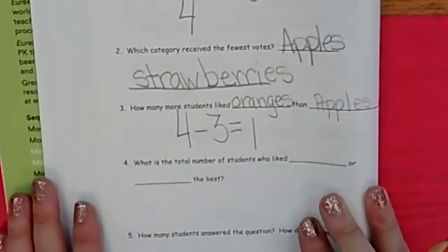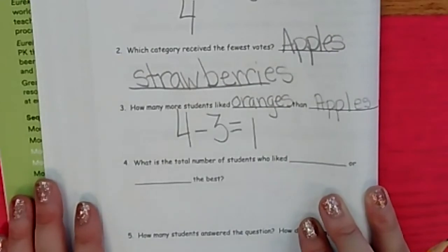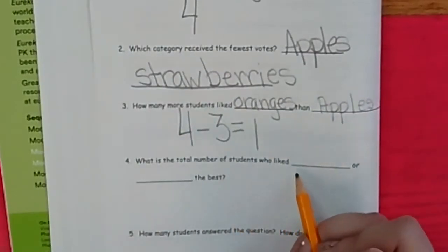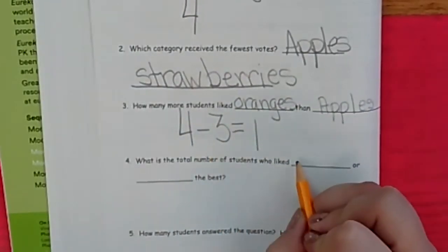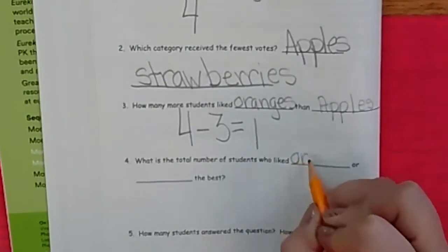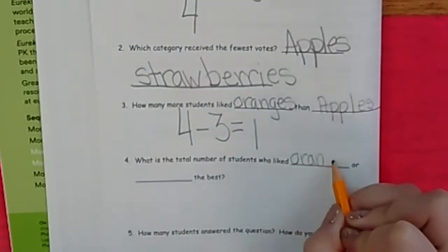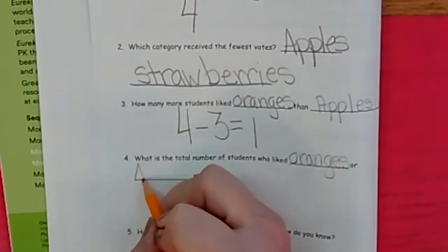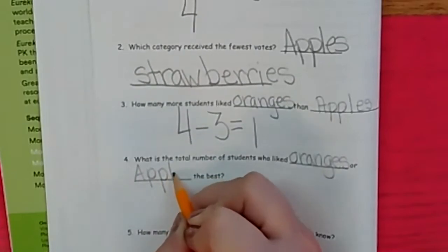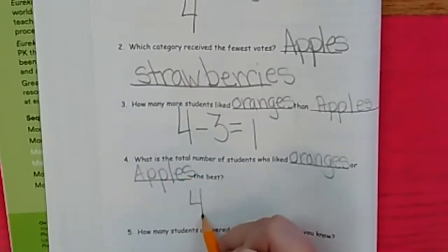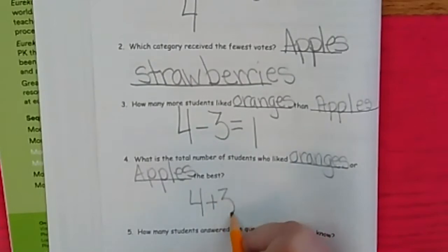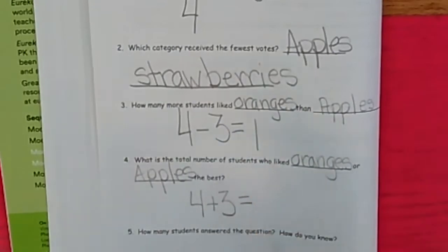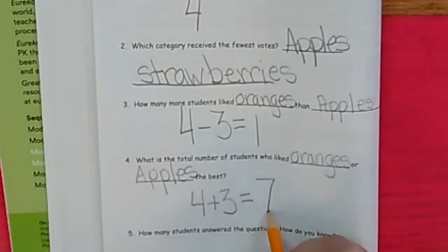What is the total number of students who like blank or blank best? Oh, you want to do that? Okay. So oranges and apples again, but this time we're going to add them, not subtract. So just copy off oranges again, O-R-A-N-G-E-S, and take apples again, A-P-P-L-E-S. Oranges and apples are how many? Yeah, four plus three. Five, six, seven. Write seven.